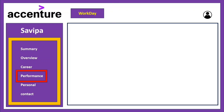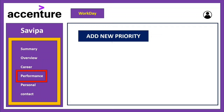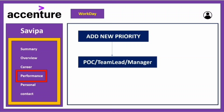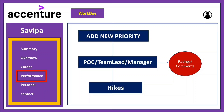Next is the Performance section. Before giving hikes, every manager, POC, or people lead will ask you to add priorities here. Once you add those priorities, they get sent to your manager, people lead, or team lead, who then provide ratings and comments. If you are performing well, they will appreciate you; if you are lacking, they will suggest improvements in remarks. Your hike is based on these ratings and comments. This is where you add your priorities.